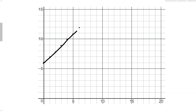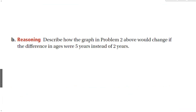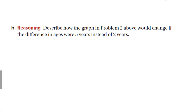Using the same graph, instead of starting at y = 2 like for Carrie and Kim's ages, we start at y = 6. The line has the same shape but starts at a different spot. If the age difference were 5 years instead of 2, the graph would start at (0, 5) instead of (0, 2).